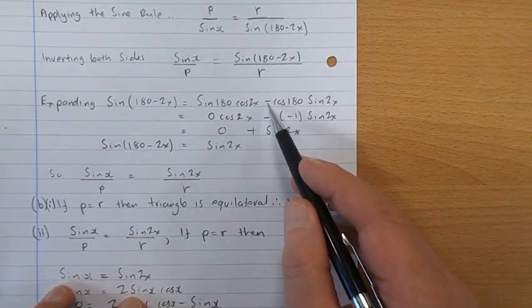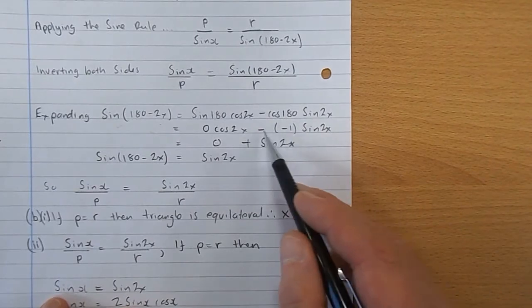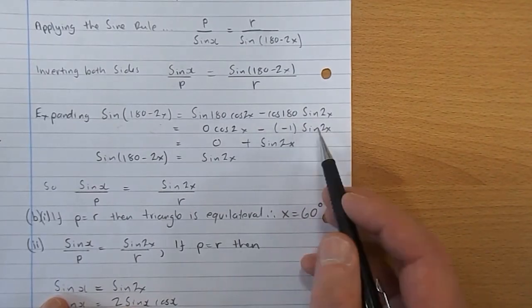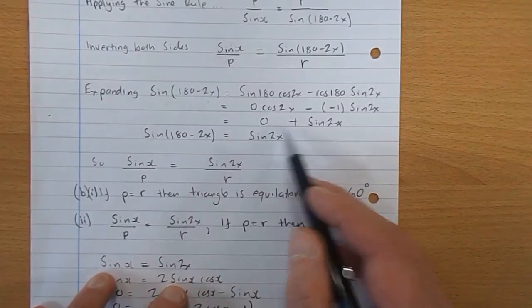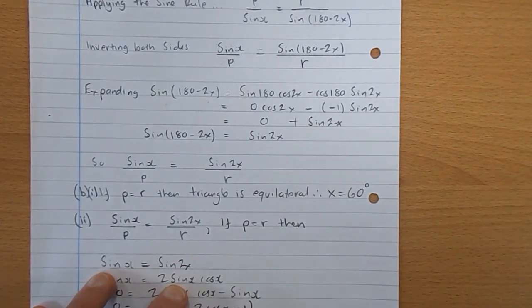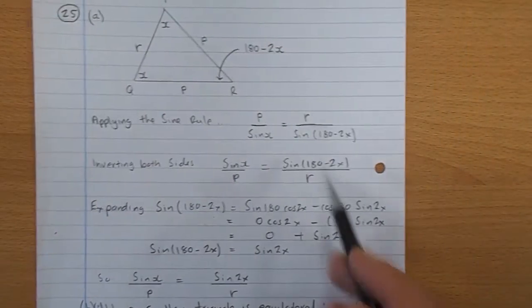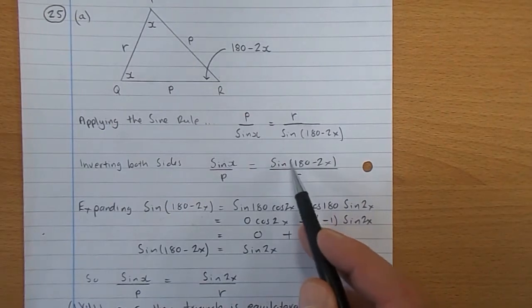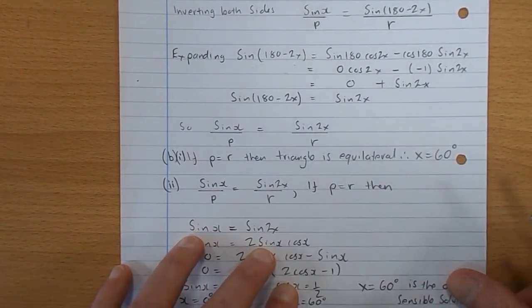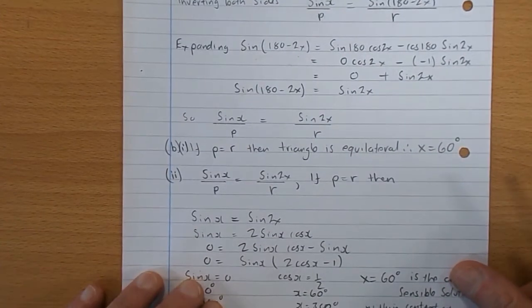Take away, the cos of 180 is negative 1, so that becomes plus sine 2X. 0 plus sine 2X is, of course, just sine 2X. So the sine of 180 take 2X is sine 2X. So I can replace that with just sine 2X, and that gives me my formula that they want us to get.